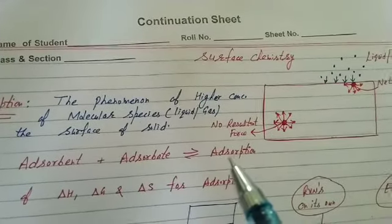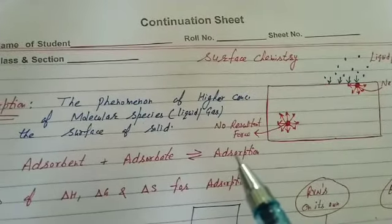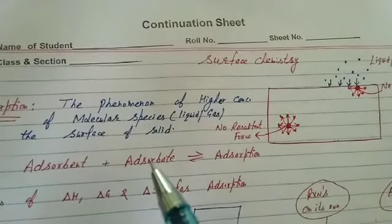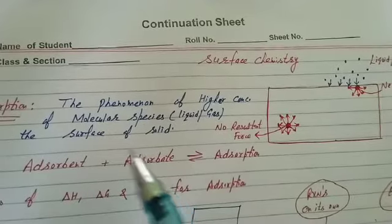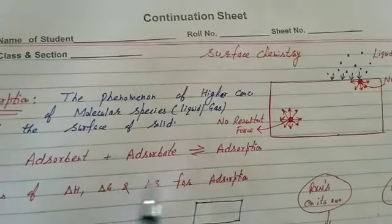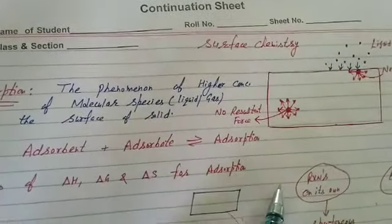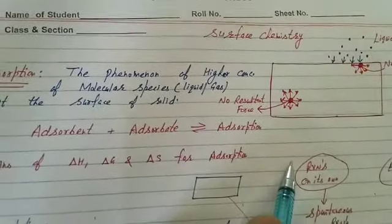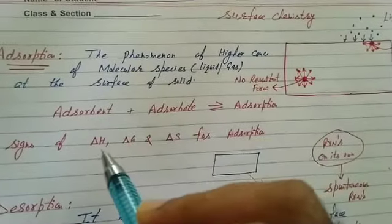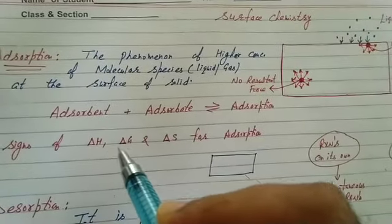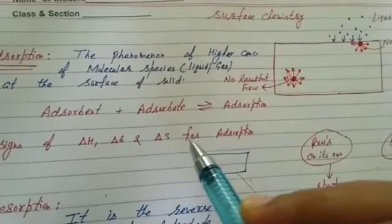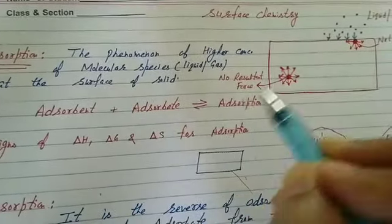We can also give the definition of adsorption as: the phenomenon of higher concentration of adsorbate at the surface of adsorbent. Now, students, next: what are the signs of ΔH, ΔG, and ΔS for adsorption?